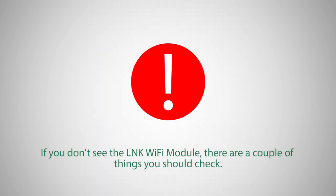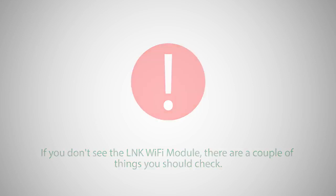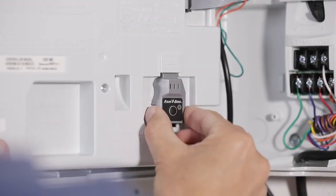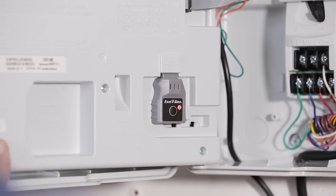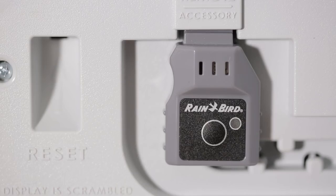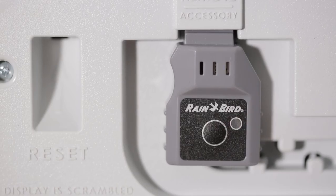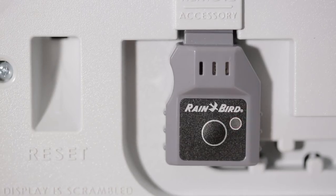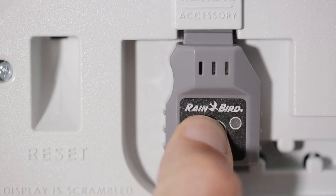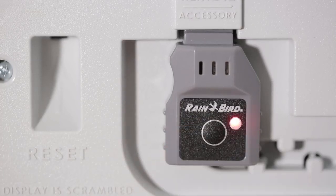If you don't see the LINQ Wi-Fi module, there are a couple of things to check. First, confirm that the LINQ Wi-Fi module is fully inserted. Next, confirm that the controller has power. Verify that the LINQ Wi-Fi module is flashing red and green. If it's not flashing, press the button on the front of the LINQ Wi-Fi module.